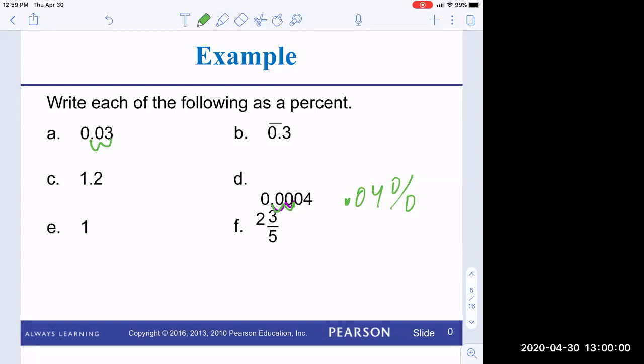And you get 3%. I guess I was thinking division because I saw this, and I thought, oh, as a decimal, that's three hundredths. That's a definition of percent. That's 3%.